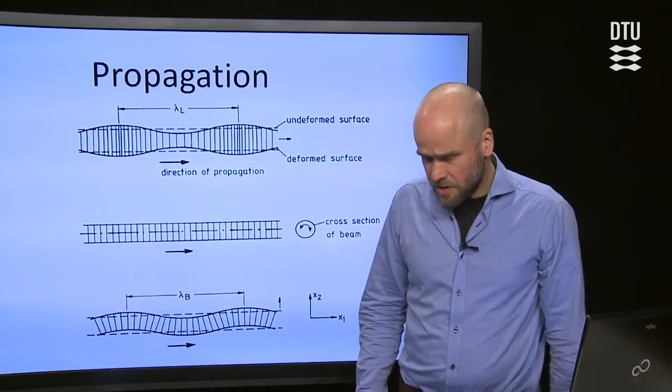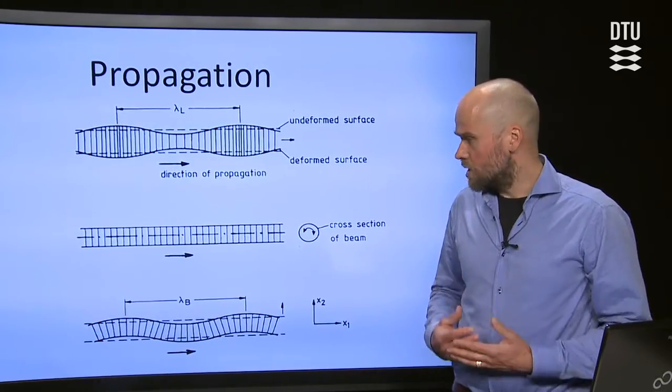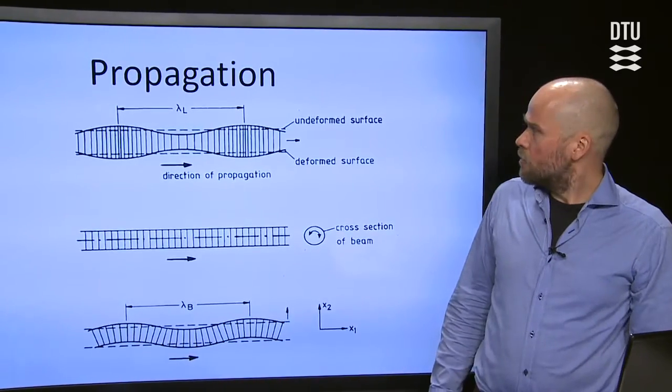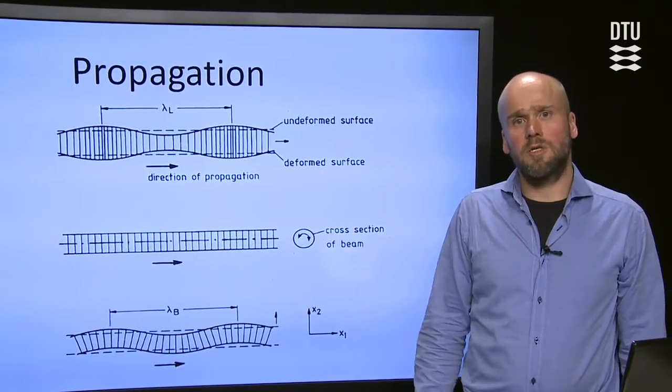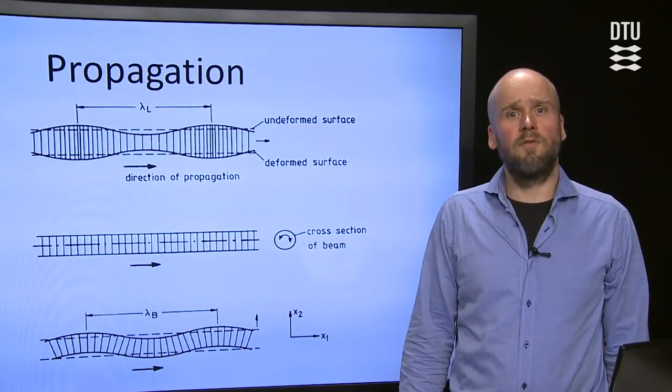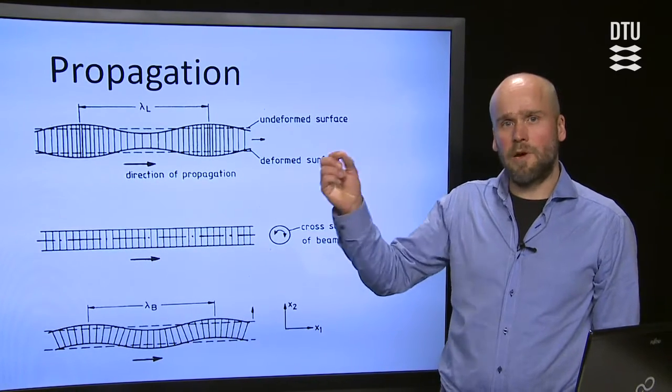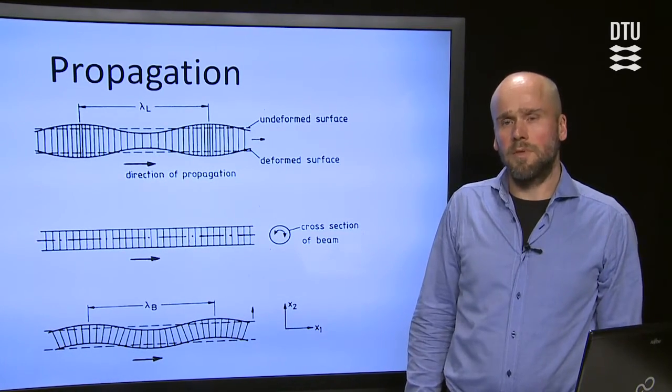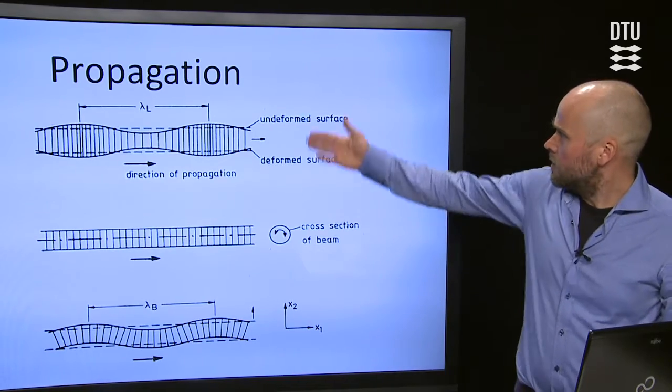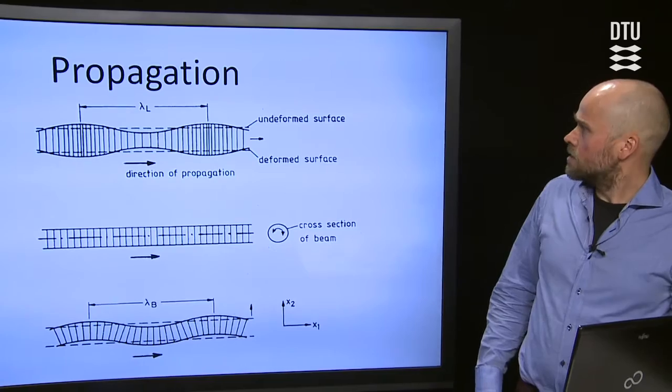The waves in the solid structure are more complicated and diverse than the acoustic waves in air. In air we just have longitudinal waves, meaning that the air particles are moving in the same direction as the propagation. This kind of wave can also be in a structure, in which case we call it quasi-longitudinal waves.